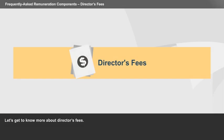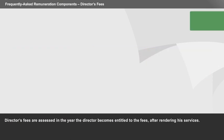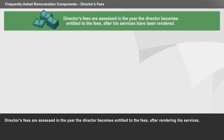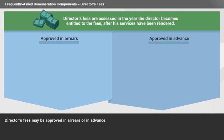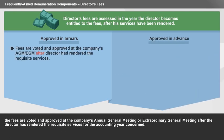Let's get to know more about director's fees. Director's fees are assessed in the year the director becomes entitled to the fees after rendering his services. Director's fees may be approved in arrears or in advance. For director's fees approved in arrears, the fees are voted and approved at the company's annual general meeting or extraordinary general meeting after the director has rendered the requisite services for the accounting year concerned.